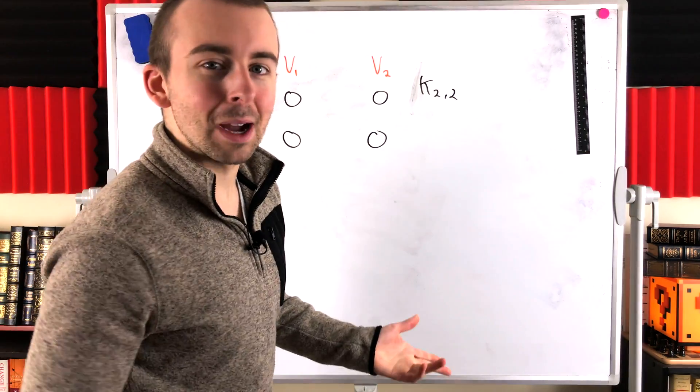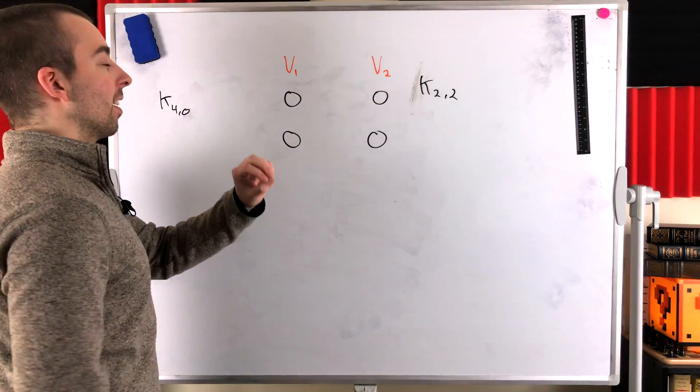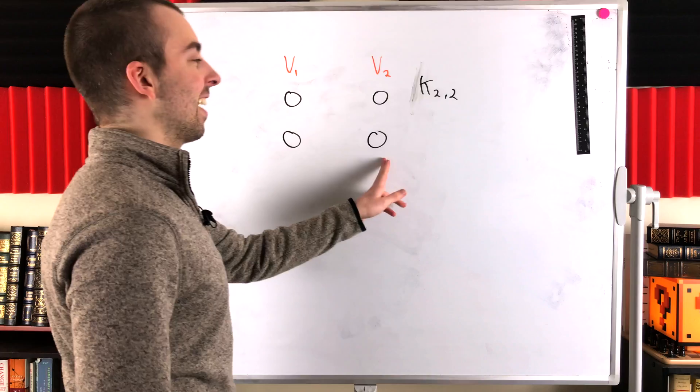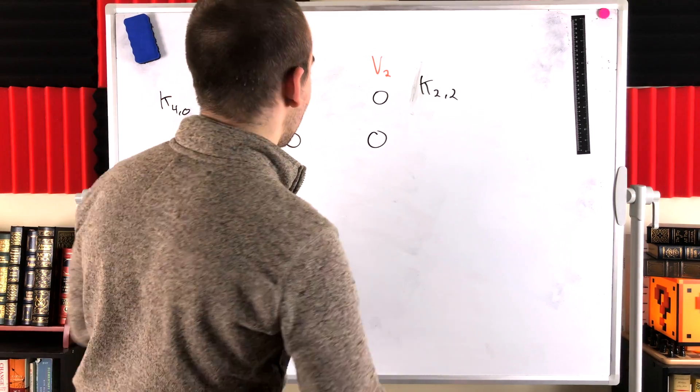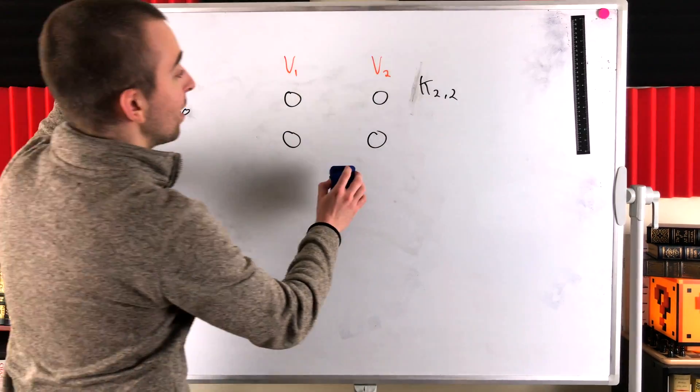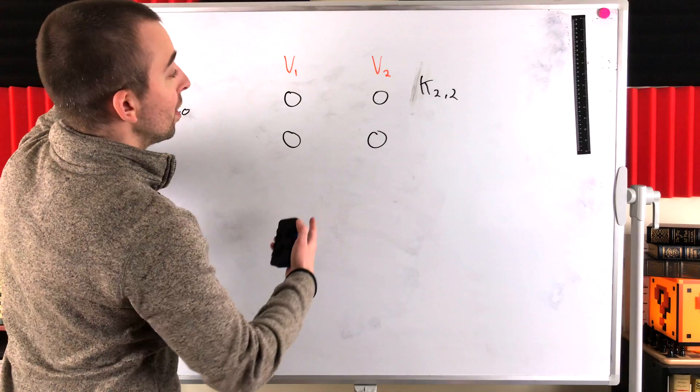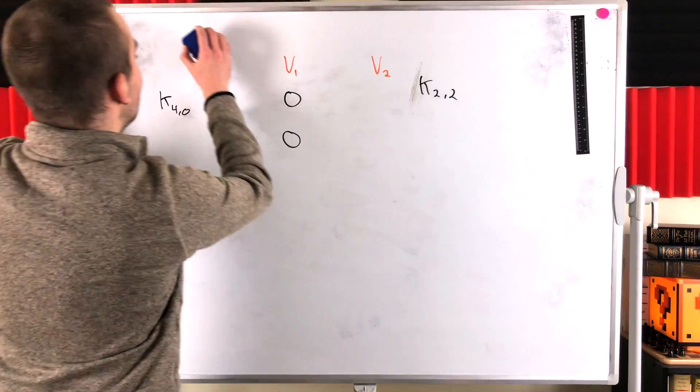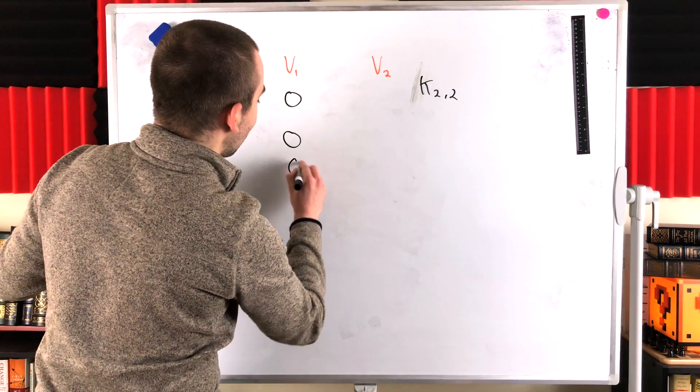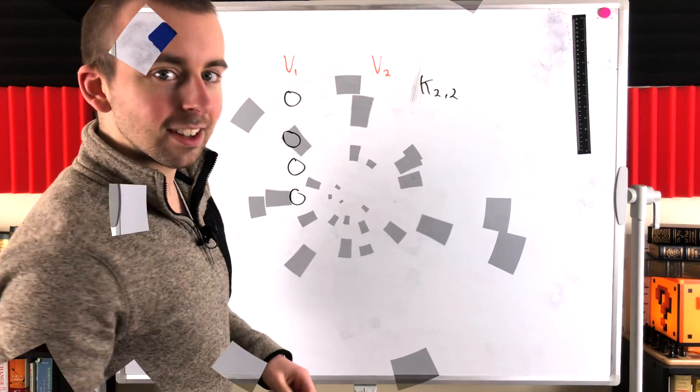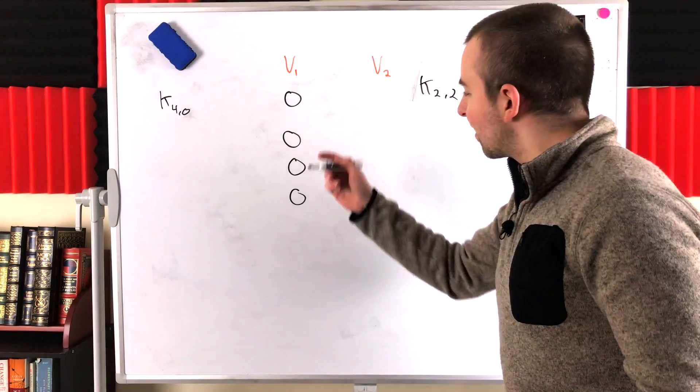It's just not the complete bipartite graph K22. It's not the complete bipartite graph with two vertices in one partite set and two vertices in the other. So yes, it is complete bipartite. This is just not how we would show that. We would have to put all four vertices into the same partite set.